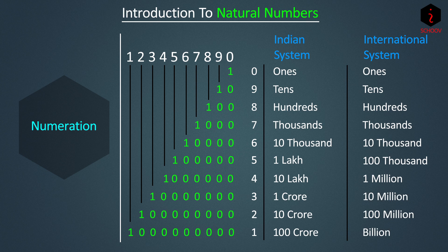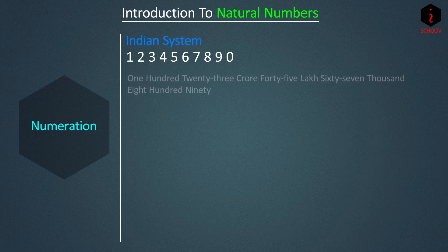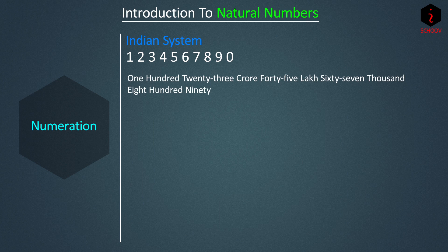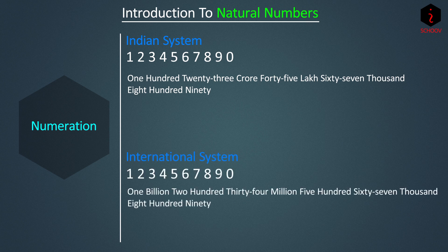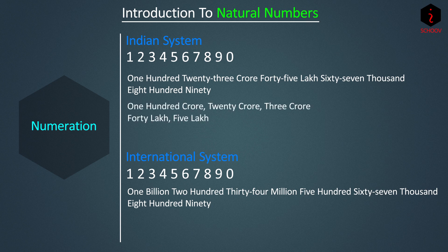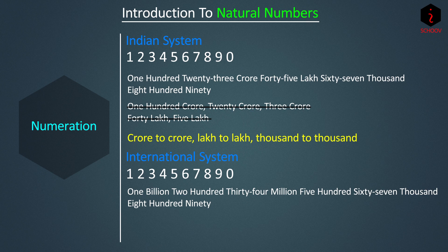The key difference is that in the Indian system there is a different name after every two digits, while in the International system there is a different name after every three digits. Ten lakh equals one million. So in the Indian system, the number 1,23,45,67,890 is written as 'one hundred twenty-three crore forty-five lakh sixty-seven thousand eight hundred ninety.' In the International system it is 'one billion two hundred thirty-four million five hundred sixty-seven thousand eight hundred ninety.' We add numbers of the same type: crore to crore, lakh to lakh, million to million.